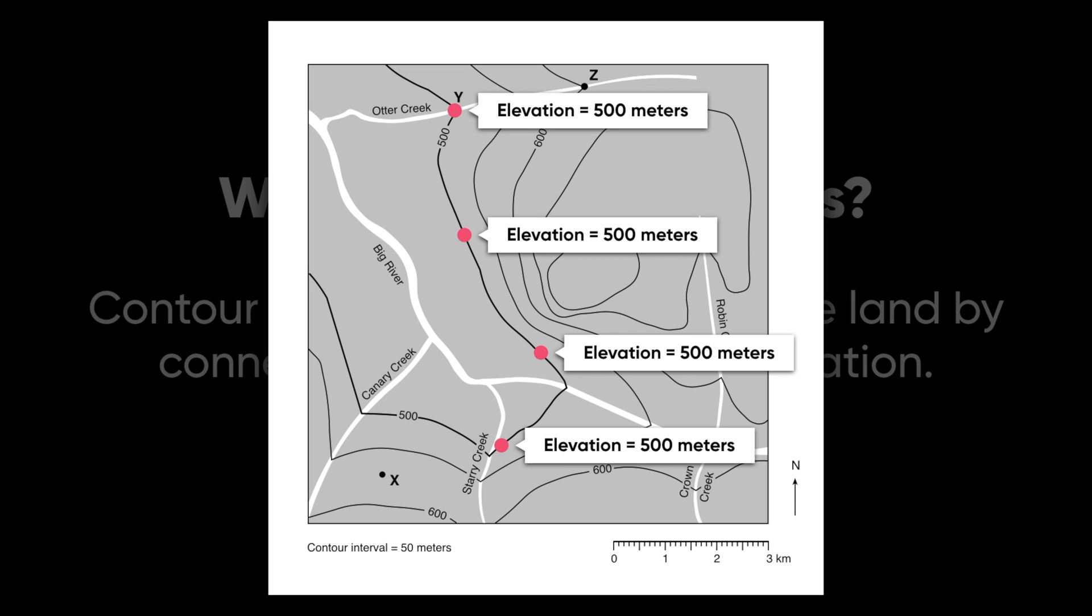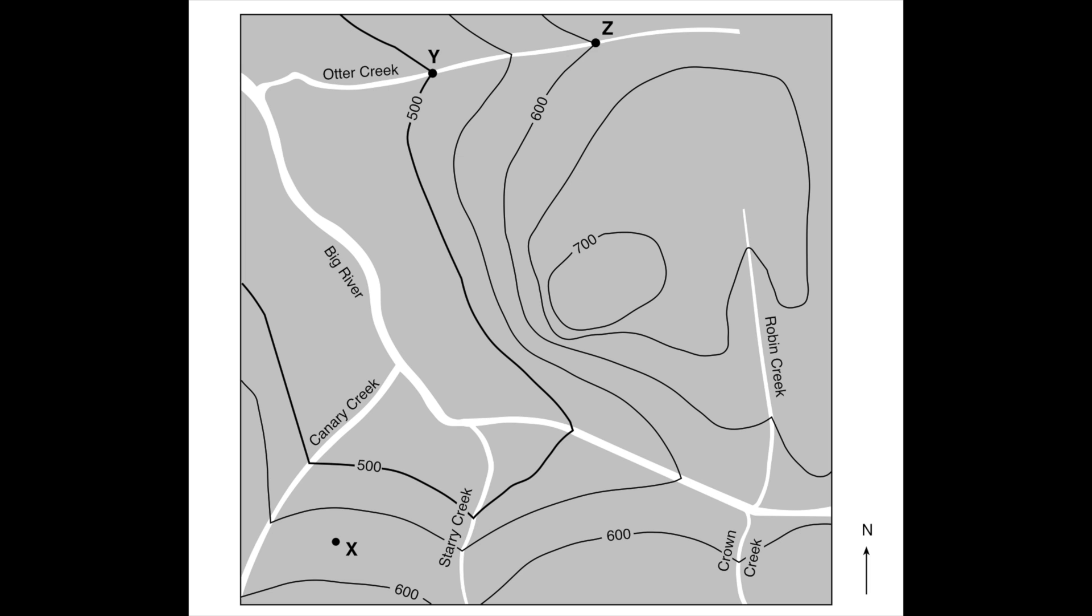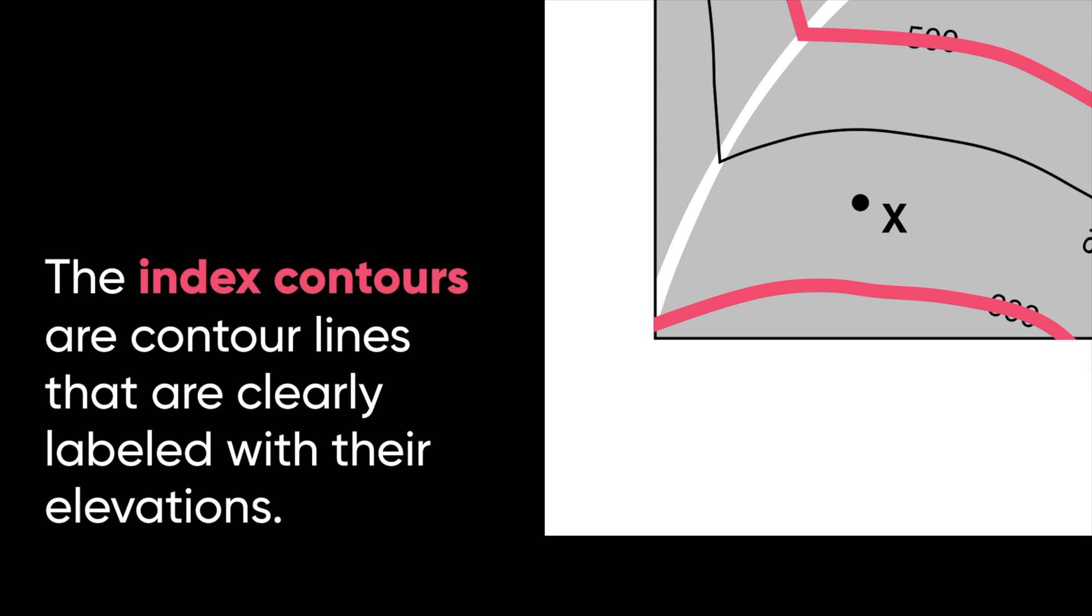Of course, the other lines represent different elevations. And we'll look at that in a moment. So let's take a closer look. One of the things you might notice is that some of these contour lines, not all of them, but some of them are labeled. For example, the 500 line is labeled, the 600 line is labeled, and these labeled lines have a name. Those are called index contours. And these are contour lines that are clearly labeled with their elevations.